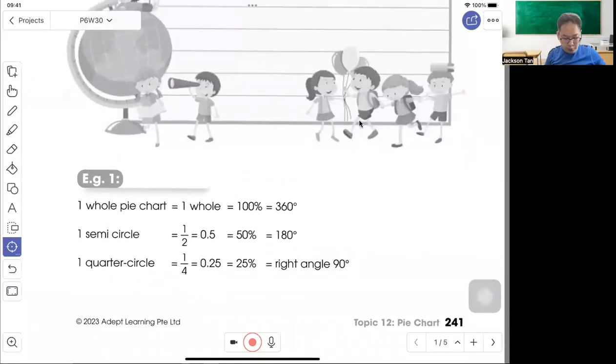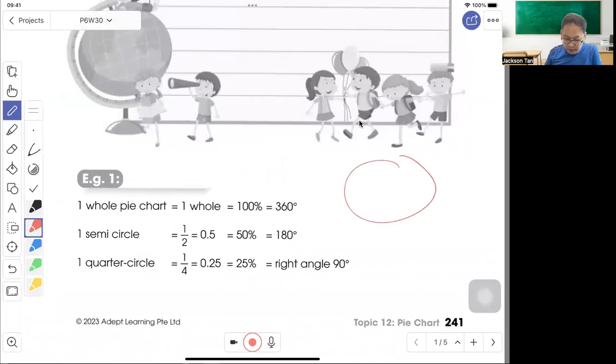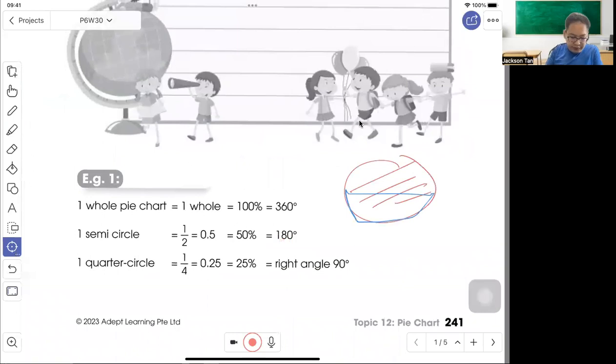First you need to know that one whole pie chart equals one whole 100% with 360 degrees. So this is a pie chart. And when it's one semicircle, half of it, 0.5 in decimal, percentage 50%, is 180 degrees, the angle.